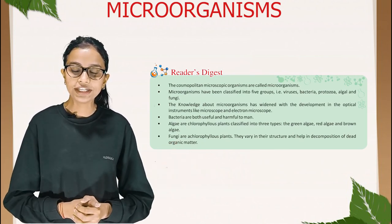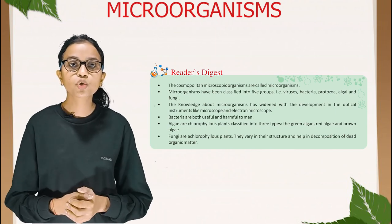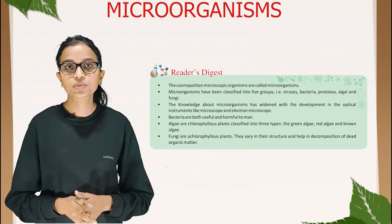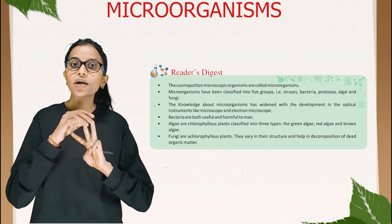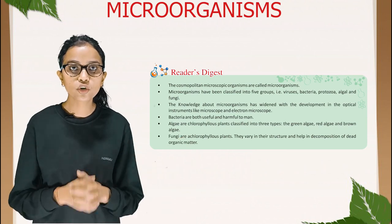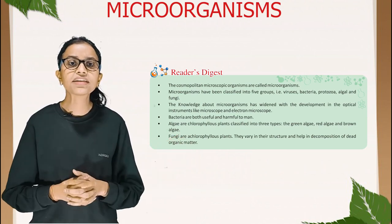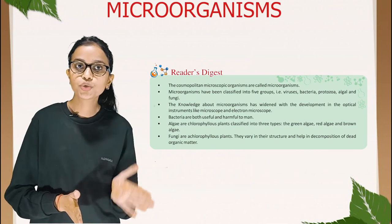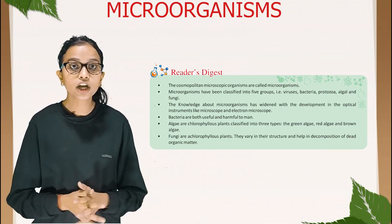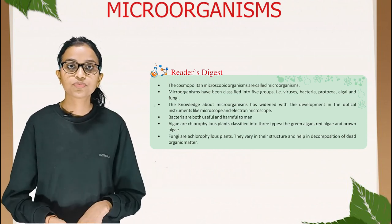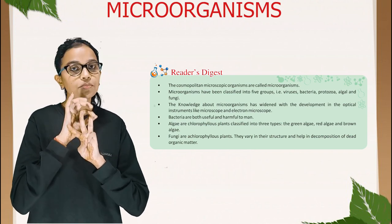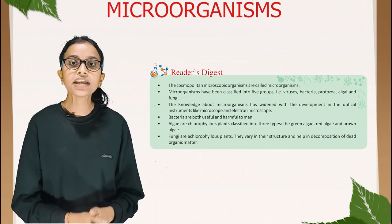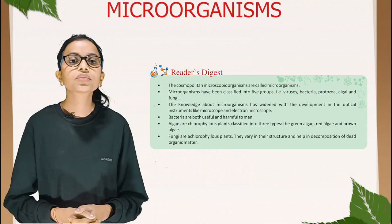Reader's Digest summary: cosmopolitan microscopic organisms are called microorganisms. Microorganisms have been classified into five groups: viruses, bacteria, protozoa, algae, and fungi. The knowledge about microorganisms has widened with development in optical instruments like the microscope and electron microscope. Bacteria are both useful and harmful to humans. Algae are chlorophyllous plants classified into three types: green algae, red algae, and brown algae. Fungi are achlorophyllous plants that vary in structure and help in decomposition of dead organic matter.